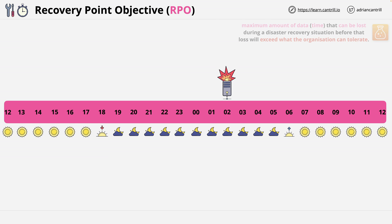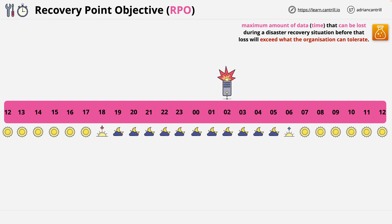RPO is defined as the maximum amount of data — generally expressed in time — that can be lost during a disaster recovery situation, before that loss will exceed what the organisation can tolerate. If an organisation tells you that they have an RPO of 6 hours, it means the organisation cannot tolerate more than 6 hours of data loss when recovering from a disaster like this server failure. Banks will be able to tolerate almost no data loss, because they deal with customer money, whereas an online store might be able to tolerate some data loss, as they can in theory recreate orders in other ways.